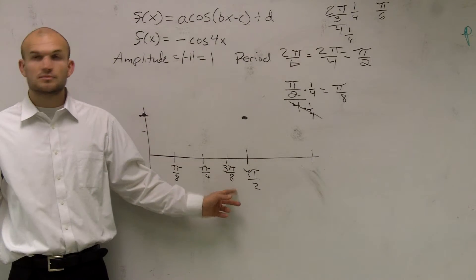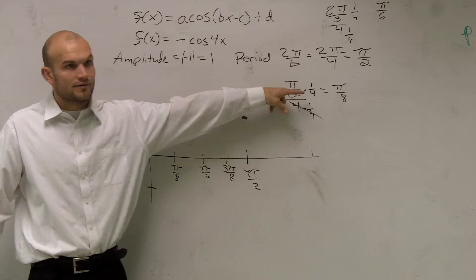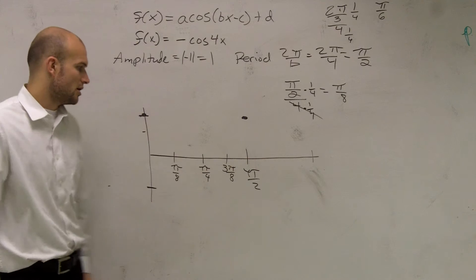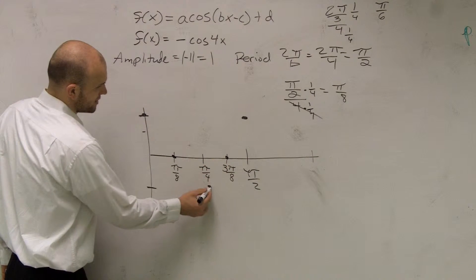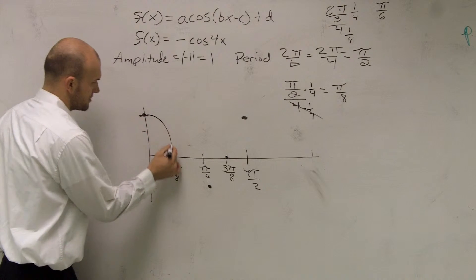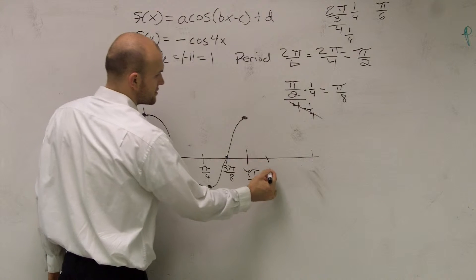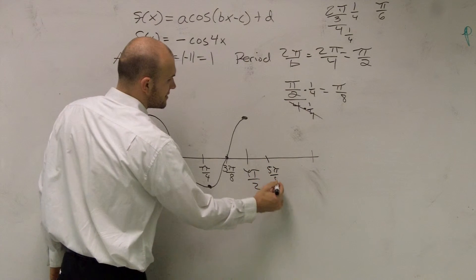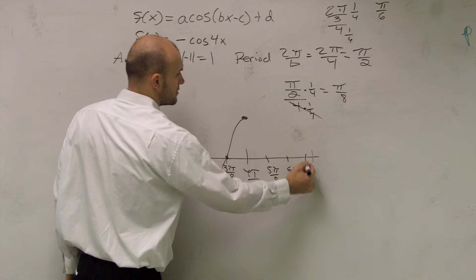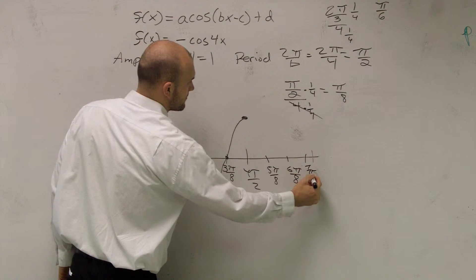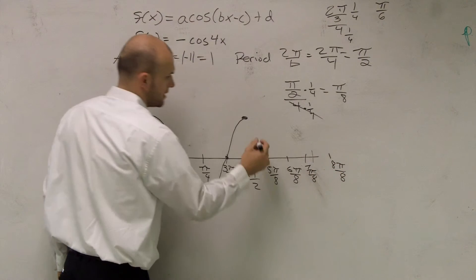Is everybody following me with what I did? The main thing you guys are getting tripped up on is the algebra of finding π over 8. But besides that, all you do is know that these are your two intercepts and here's going to be your minimum. Then you just keep adding π over 8: so 5π over 8, 6π over 8, 7π over 8, 8π over 8 — and you just keep on going.